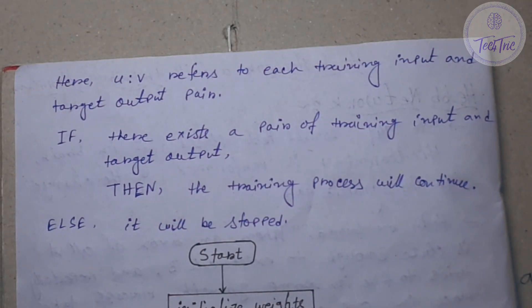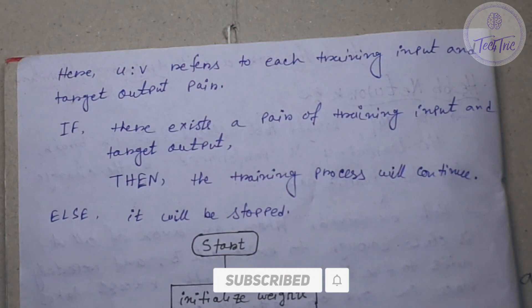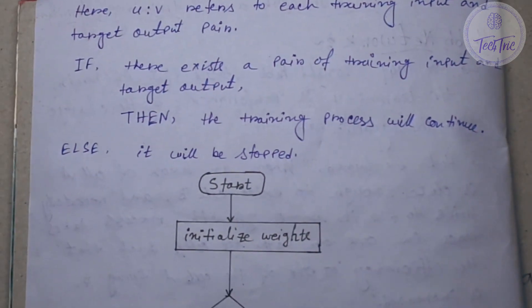Algorithm looks like this: if there exists a pair of training input and target output, then the training process will continue, else it will be stopped. So let us see the flowchart of Hebb network.